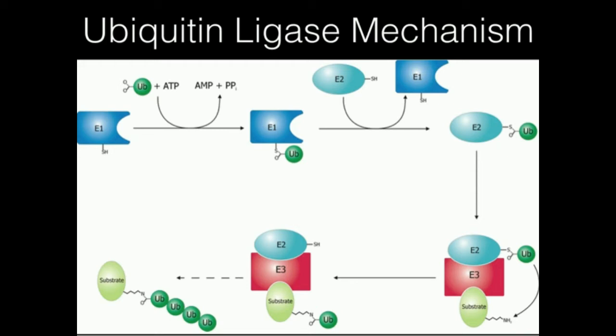is going to attach multiple ubiquitin proteins onto the damaged protein. And ubiquitin ultimately, or multiple ubiquitins, that is, serve as a sort of signal that tells the cell that this protein is damaged and it needs to be destroyed.